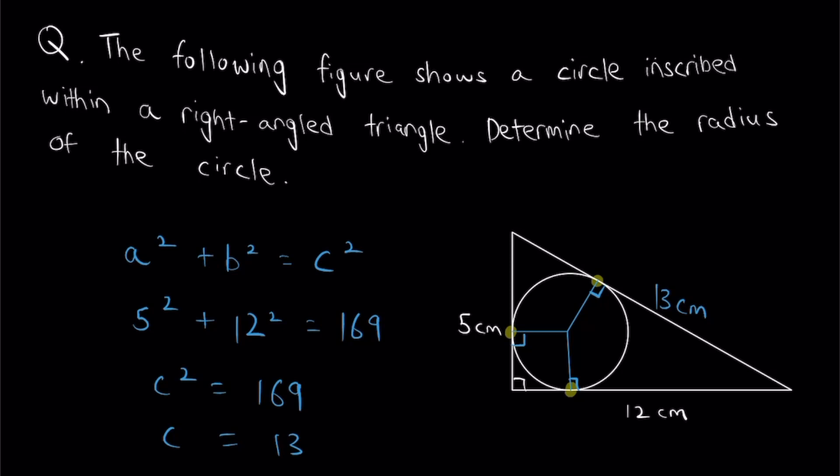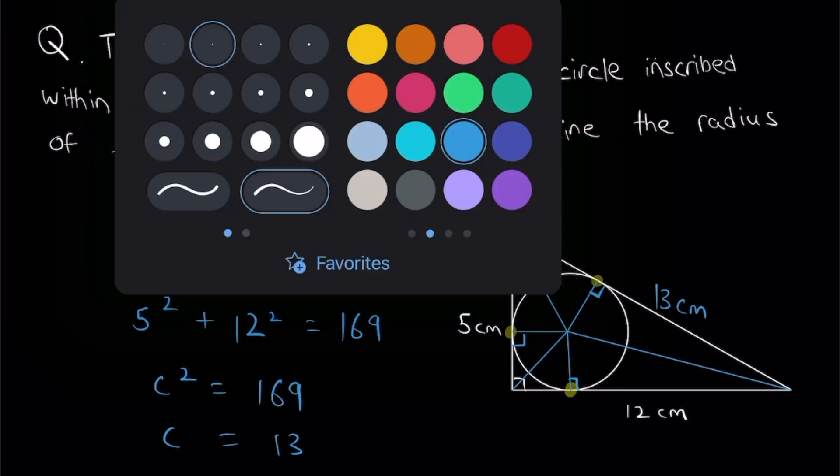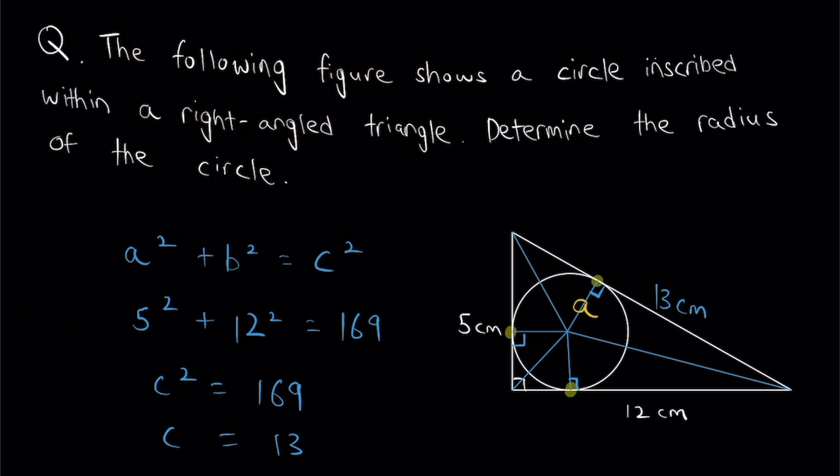Now that I've done this, I'm actually going to split this big triangle up into three smaller triangles. And I'm going to show you why in just a second. So I'm going to call this top triangle triangle A, this triangle over here triangle B, and triangle C right over here.